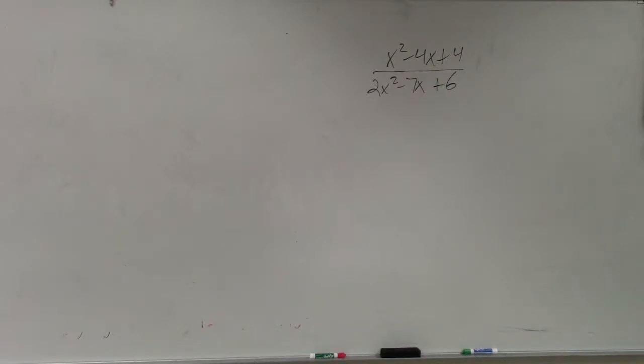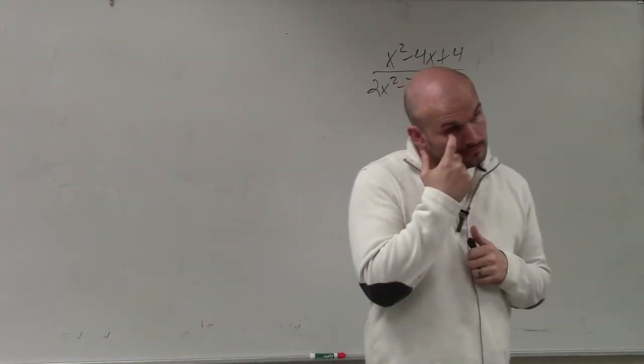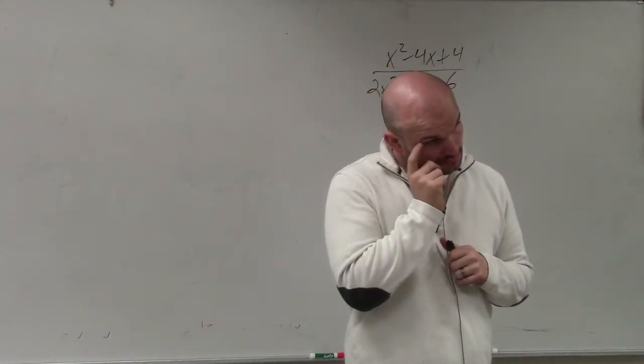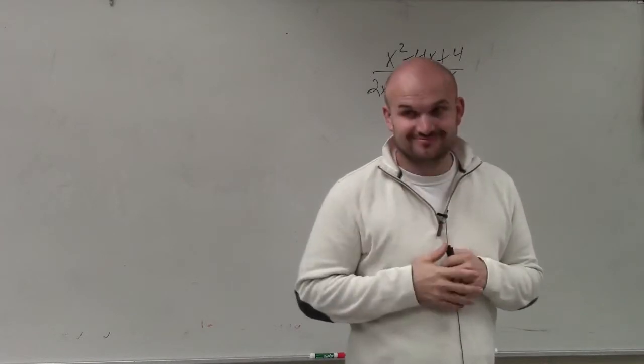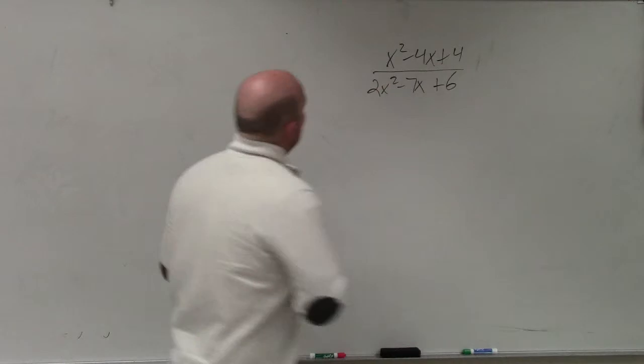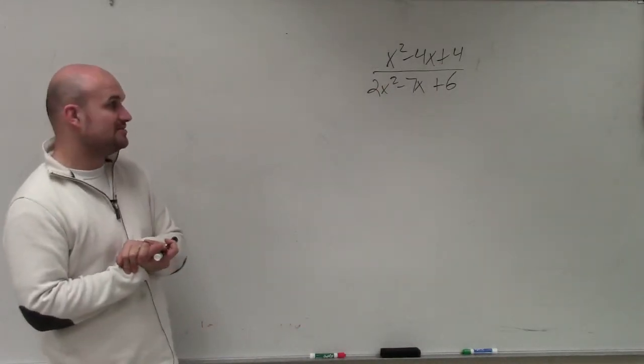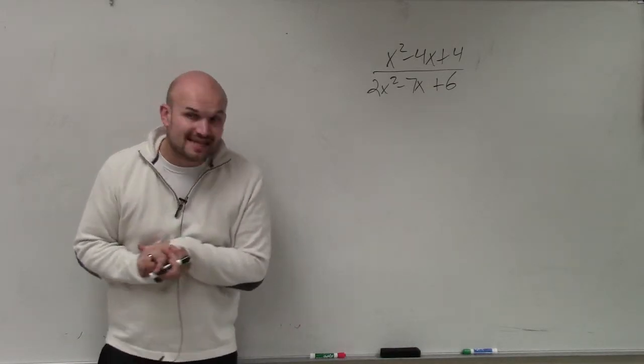Alright, now we're going to go ahead and do the math thing. The reason you're jumping on this problem, what we have is x squared minus 4x plus 4 divided by 2x squared minus 7x plus 6.